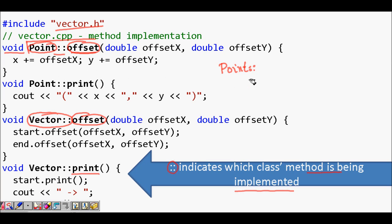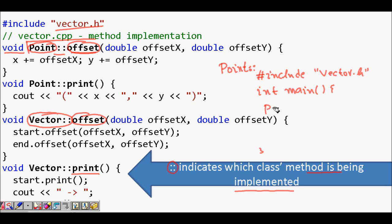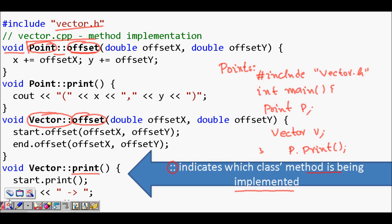In main, you can just include vector.h, and then you can define objects of these classes. For example, you can declare a Point object p and a Vector object v, then call methods like p.print() and v.print(). Separating the header file and the .cpp file is for better understanding of the code and for handling much larger code bases. Thanks a lot.